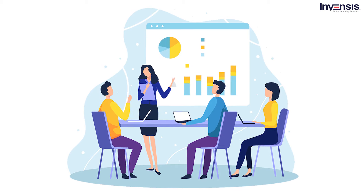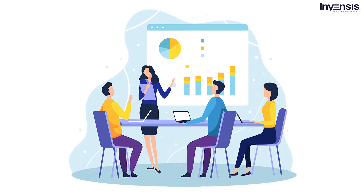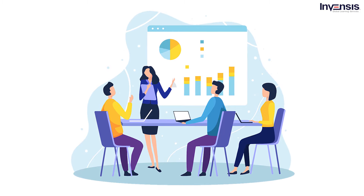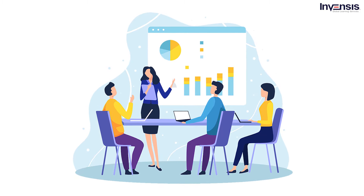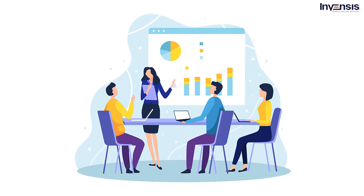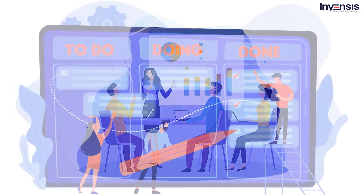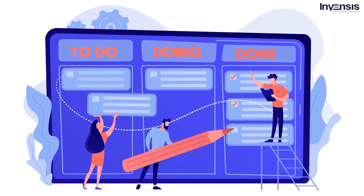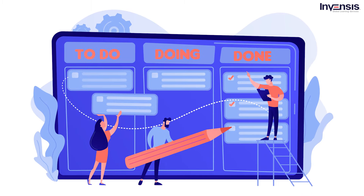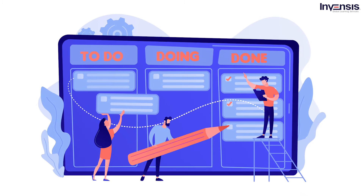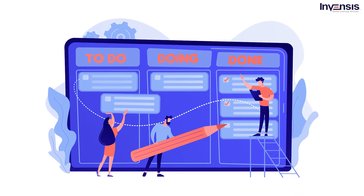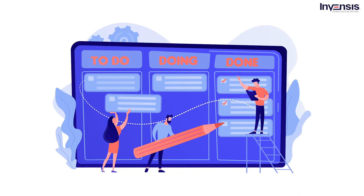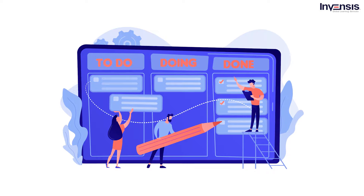Effective project management in an organization can do wonders in terms of efficiency and reaching goals within the given time. A systematic approach and structured processes in each phase of the project life cycle result in yielding the best results.